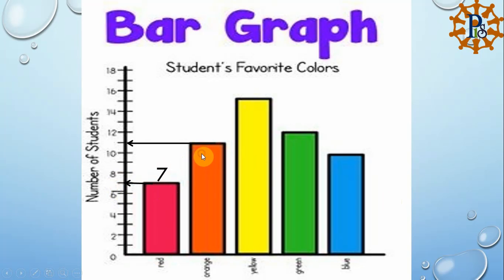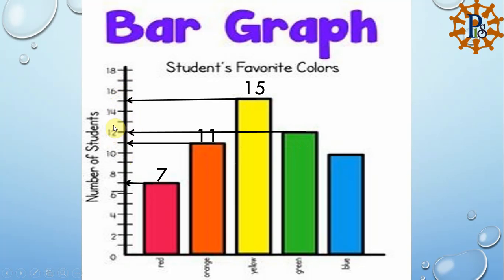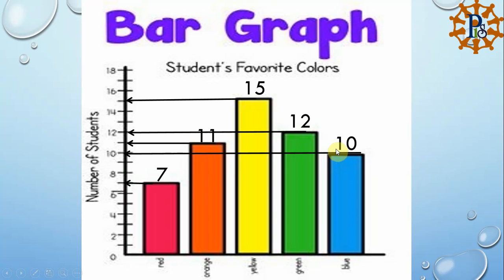So the red bar has a value of 7. The orange bar is between 10 and 12, so it's 11. The yellow bar is between 14 and 16, so it's 15. The green bar comes to 12, and the blue bar comes to 10. Once I know the value of each bar, solving the questions becomes easy.